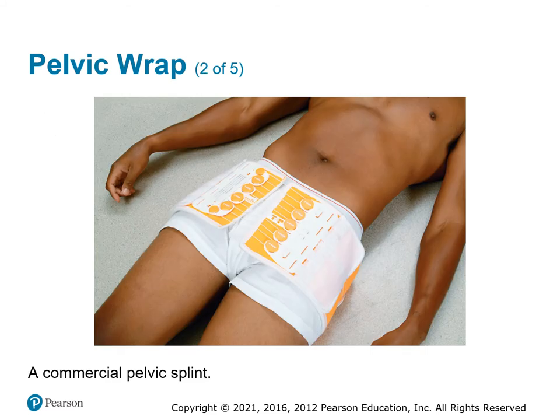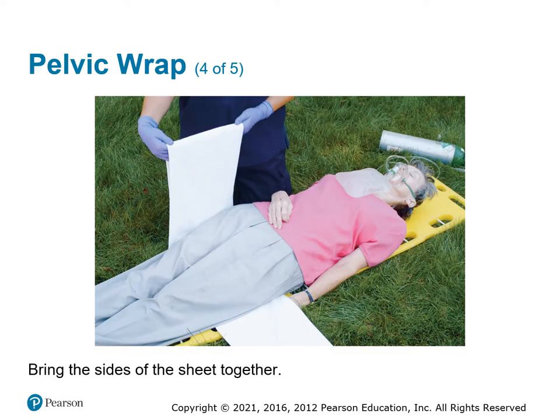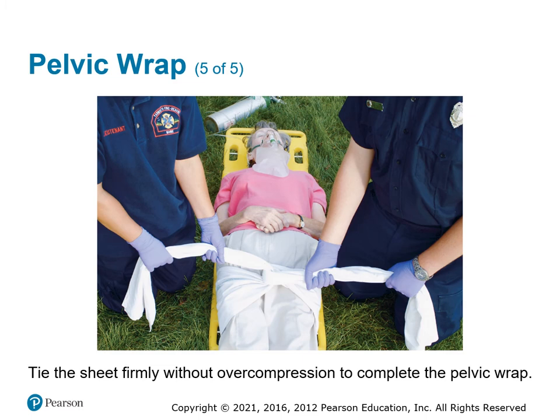This is the commercial wrap — what you would see in the ER or a recovery ward. The other option is the sheet method. Think about the pain caused to the pelvis if you're rolling the patient back and forth to get them onto a backboard, so consider other options. With a sheet, you draw it up on either side and tie it in place to pull the pelvis back together.